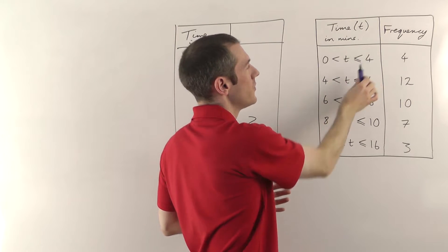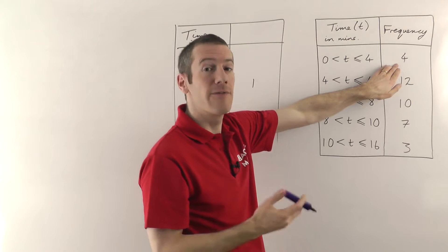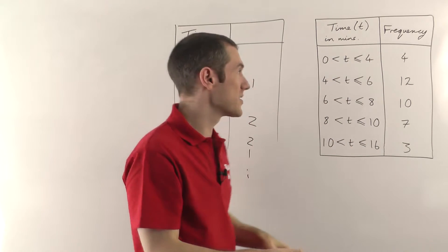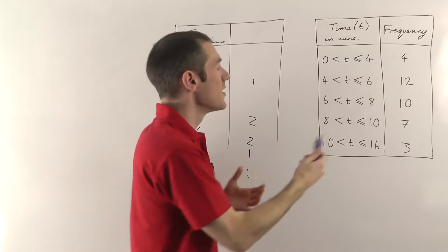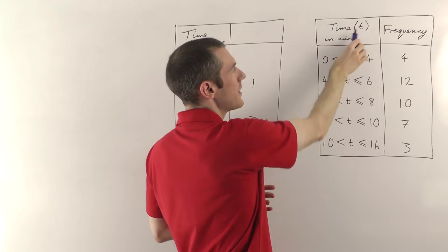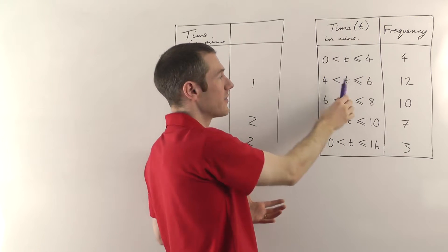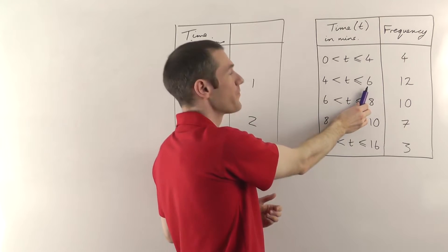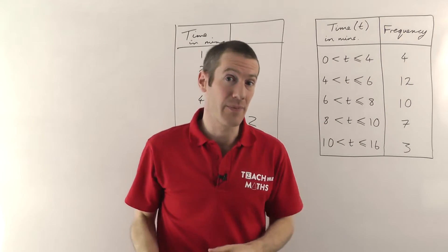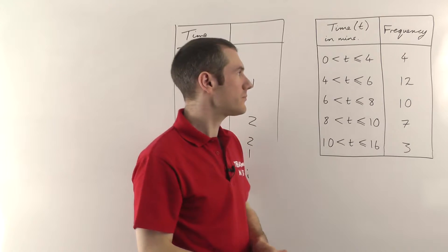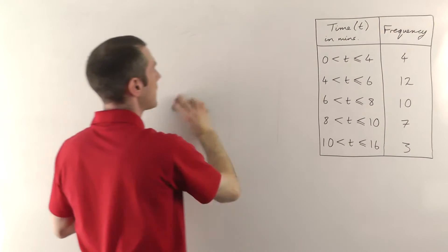So the first group here goes from 0 to 4, meaning anybody who took between 0 and 4 minutes gets grouped there. The frequency tells you there are four people who took between 0 and 4 minutes. If you're wondering about the inequality sign in the middle, go and watch the inequalities video. Essentially it means the time t has to sit between 0 and 4. The 'less than or equal to' means it can be equal to 4 but not equal to 0. This allows us to avoid the overlapping boundaries problem you can get with continuous data. So rather than listing every value, we want to group the data like that.